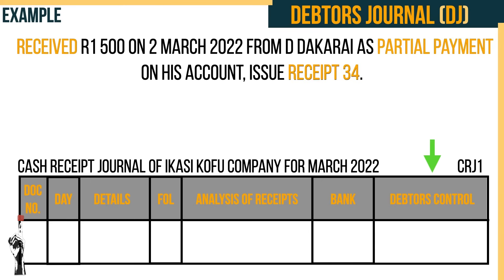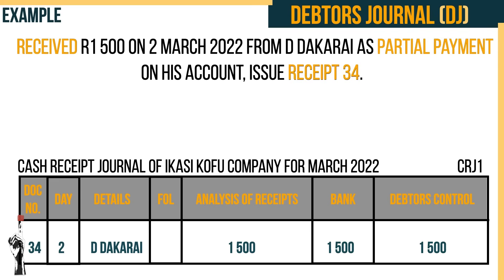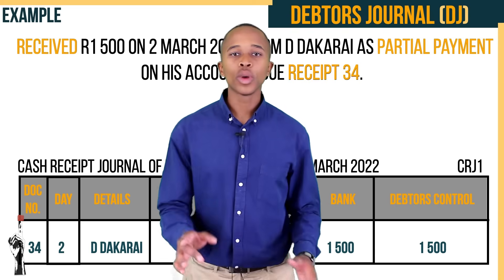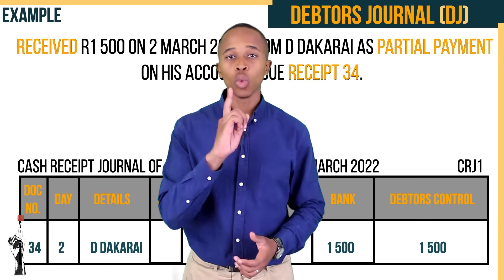You will see there is an extra column in the CRJ named 'debtors control' — this is the column you use to record when debtors pay their credit. The receipt number is recorded in the doc column. The date the receipt was issued is the 2nd of March. The debtor's name is D. Dakarai, and the total amount of R1,500 is recorded in the analysis of receipts, bank, and debtors control columns.